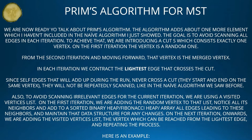Prim's algorithm adds about one more element which wasn't included in the naive algorithm. The goal is to avoid scanning all edges in each iteration. To achieve that, we introduce a cut S which consists of exactly one vertex. On the first iteration, the vertex is arbitrary. From the second iteration moving forward, that vertex is the merged vertex. In each iteration, we contract the lightest edge that crosses the cut. Self-edges that accumulate during the run never cross the cut — they start and end on the same vertex — so they will not be repeatedly scanned, unlike in the naive algorithm.